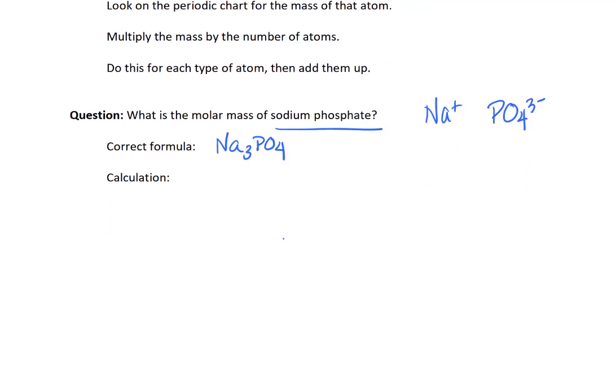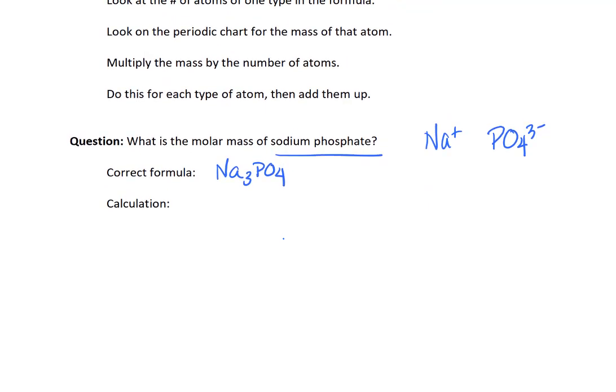Now I'm going to over show my work here in this calculation to show all of the steps. This is by no means the amount of work that you would have to be expected to write down at any point. So I'm going to look up the atoms of each type on the periodic table and figure out what their mass is. Then I'm going to multiply that mass by the number of atoms. So I'm going to look up sodium. My periodic table says sodium has a mass of 22.99. Yours might say 23 and that's perfectly fine. And we have three sodiums.